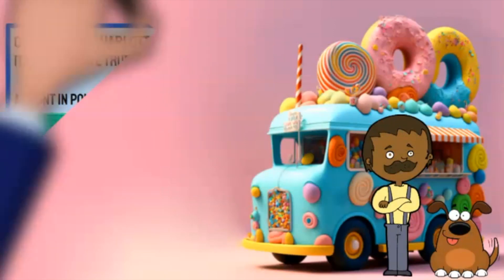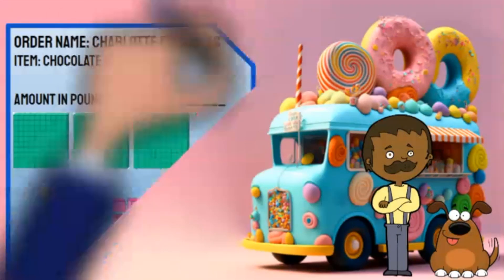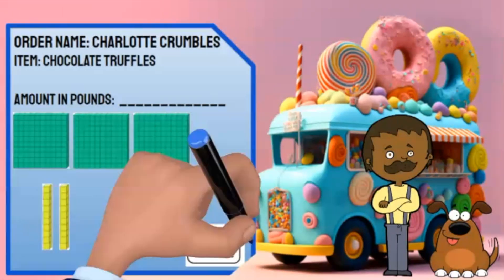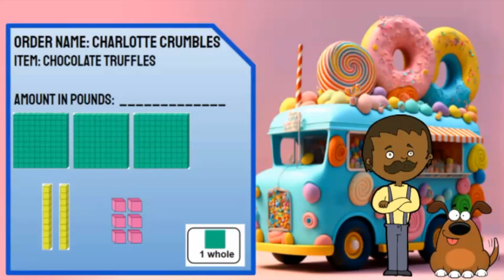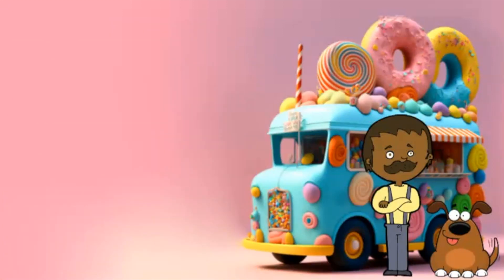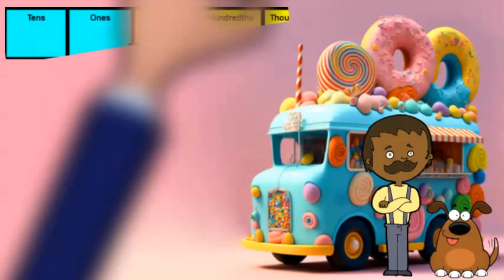I just received this order from Charlotte Crumbles. Instead of writing a number on her order, Charlotte modeled the number using base-10 blocks. I have to compose the number that is represented to complete her order.